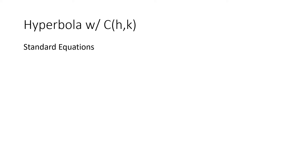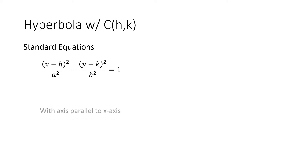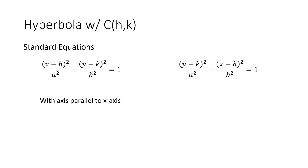These are the standard equations of our hyperbola with center at (h, k). The first one: the quantity (x minus h) squared over a squared, minus the quantity (y minus k) squared over b squared, equals 1, wherein its axis is parallel to the x-axis. The other standard equation: the quantity (y minus k) squared over a squared, minus the quantity (x minus h) squared over b squared, equals 1, with axis parallel to the y-axis.